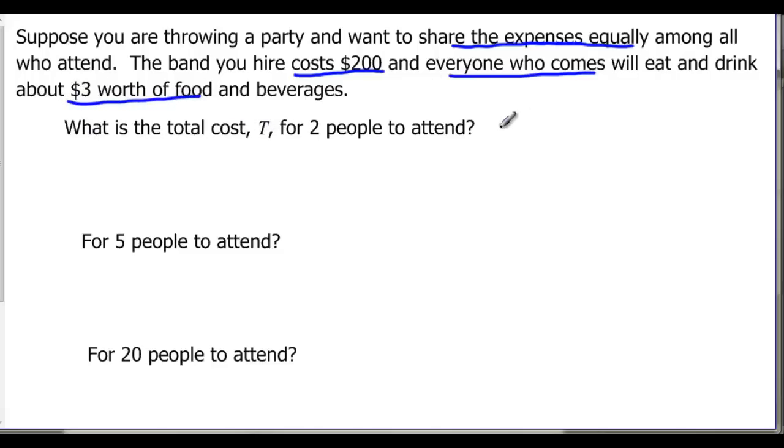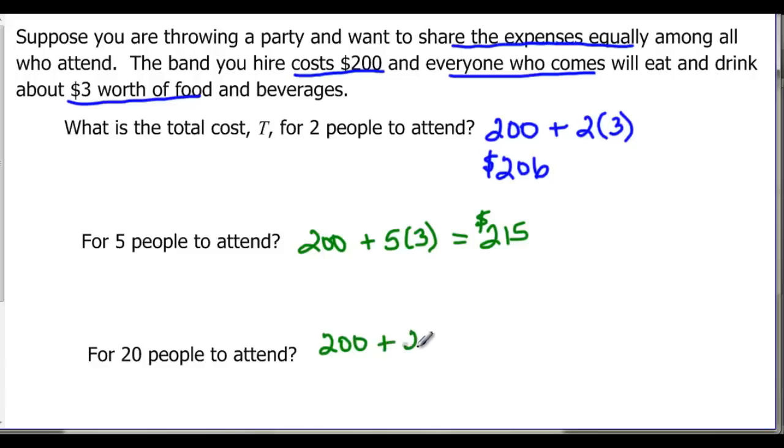What is the total cost T for two people to attend? Well the total cost is the $200 for the band plus the two people times that $3 that they're going to eat and drink, or $206. What happens if five people show up? Well you still have that $200 for the band but this time you have five people that you have to multiply by that $3. So you'll have $215. And if twenty people show up again you have the flat fee of the cost of the band plus you have twenty people that are going to eat $3 worth of food. So now we have $260.